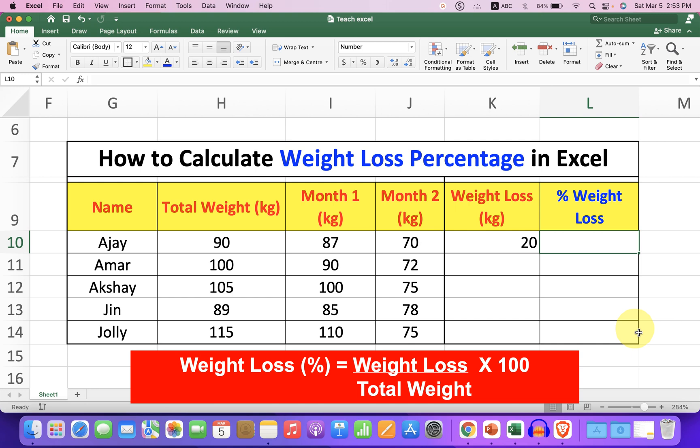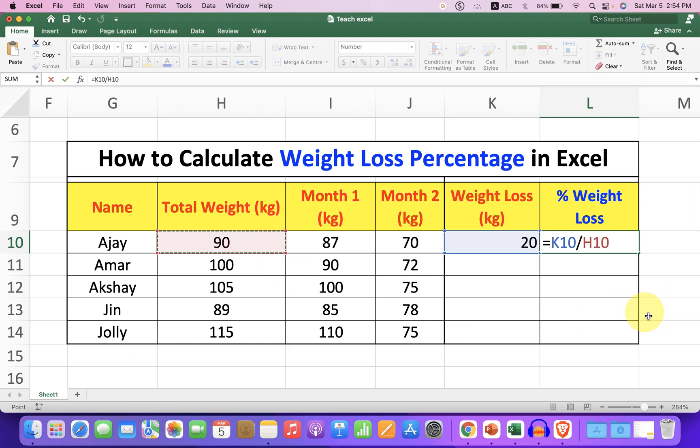So let's enter the formula: equal to weight loss divided by total weight, multiply by hundred, and press enter on your keyboard. So the weight loss was 22 percent.